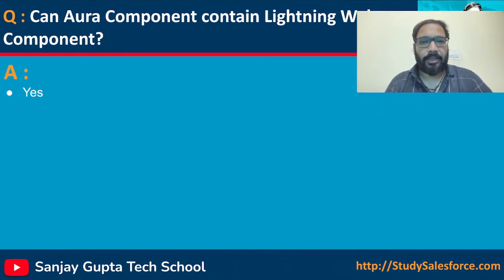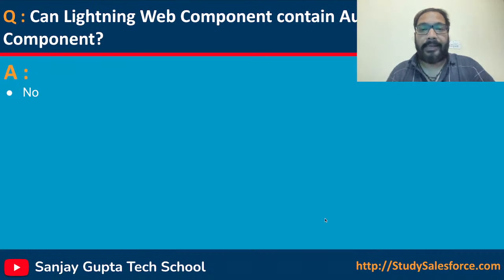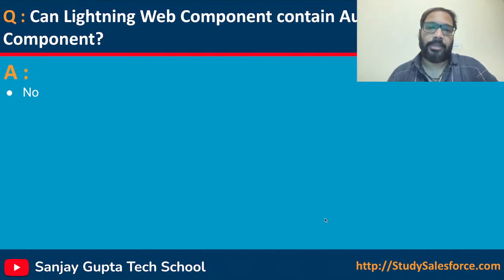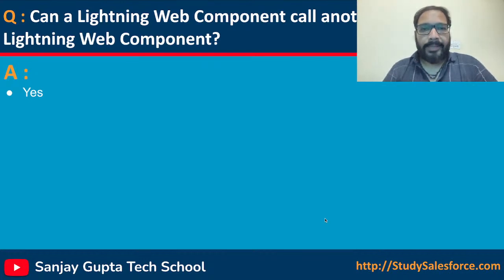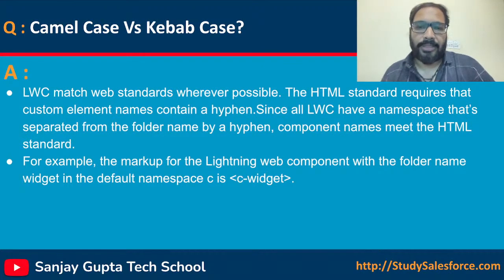The next question is: can an Aura component contain Lightning Web Components? The answer is yes. Then: can a Lightning Web Component contain an Aura component? No — because Lightning Web Component is built using web standards, it cannot contain Aura components since Lightning Web Component doesn't know about Aura. And: can a Lightning Web Component call another Lightning Web Component? Yes, nesting can be done in a parent-child relationship.